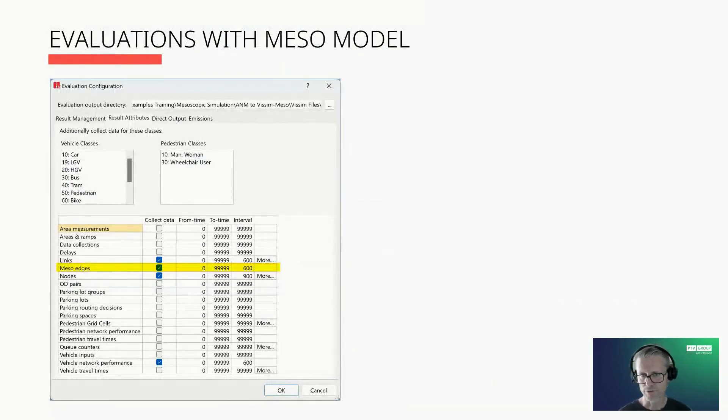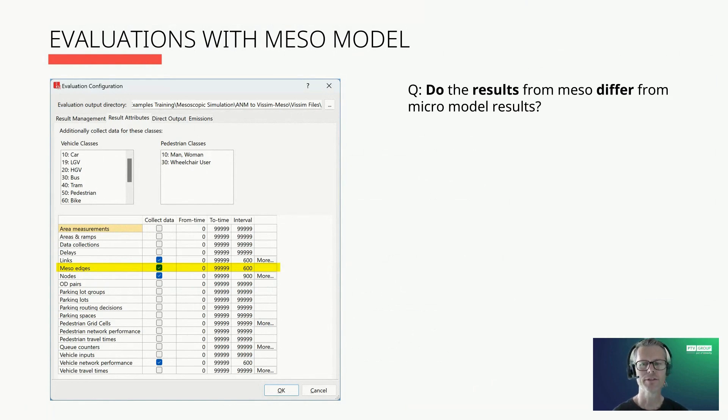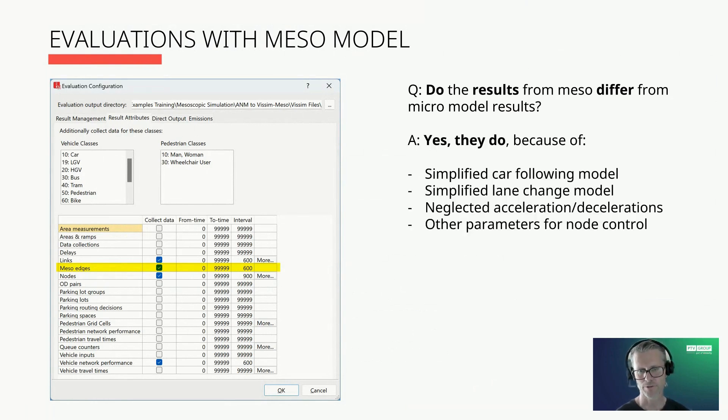Besides the standard evaluations you use within microscopic modeling like links evaluation or network performance, there is one more evaluation dedicated to meso simulation only—that is called meso edges evaluation. You do the setup in the standard way by defining the from time, to time, and intervals. Nothing special is needed. People often ask if the results of a meso model differ from a microscopic one. The answer is yes, because of simplified car following models, simplified lane change model, neglected acceleration and deceleration, and other parameters for node control.